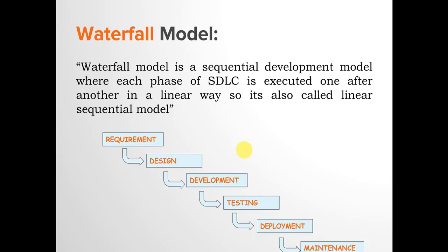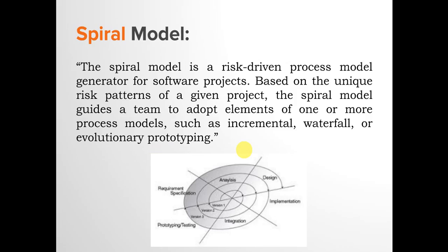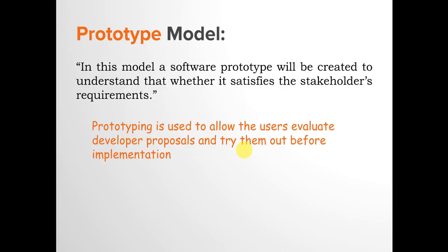Next is the Spiral model, which is a risk-driven process model for software projects based on the unique risk pattern of a given project. It guides a team to adopt elements of one or more process models such as Incremental, Waterfall, or Evolutionary Prototyping. It is essentially a combination of different models, driven by the risk associated with the project.